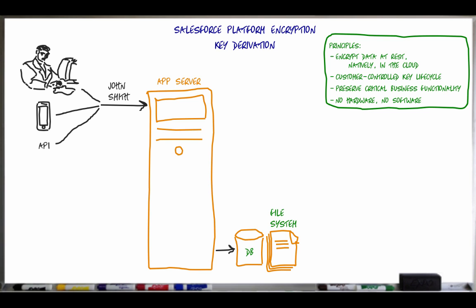We often get the question from customers: where are my encryption keys stored? The answer is that the final, org-specific AES-256 keys used to encrypt customer data are never persisted to disk. Instead, they are derived on demand from several individual secrets generated by logically and physically separated hardware security modules, and then delivered to the application's Java tier when required for encryption and decryption of data.